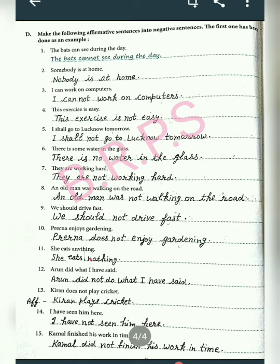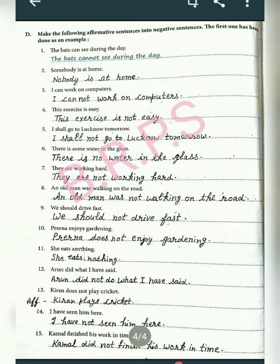Next: 'She eats anything' becomes 'She eats nothing.' Next: 'Arun did what I have said' becomes 'Arun did not do what I have said' — 'did' is second form, so in negative we use 'did not' with first form. Next: 'Kiran does not play cricket' is already negative, so the affirmative is 'Kiran plays cricket.' Next: 'I have seen him' becomes 'I have not seen him.' Finally: 'Kamal finished his work in time' becomes 'Kamal did not finish his work in time.' So we complete the exercises. I hope you understood. Thank you. Have a nice day.